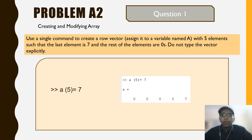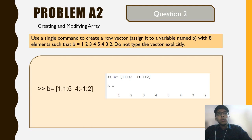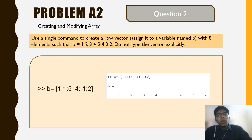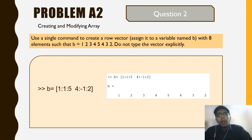Question 2 of problem 2: use a single command to create a row vector assigned to a variable named p with 8 elements such that p equals [1 2 3 4 5 4 3 2]. We go to the command window and write: p = [1:5, 4:-1:2]. The first part is 1 colon 5, and the second part is 4 colon minus 1 colon 2. After pressing enter we get the vector [1 2 3 4 5 4 3 2].